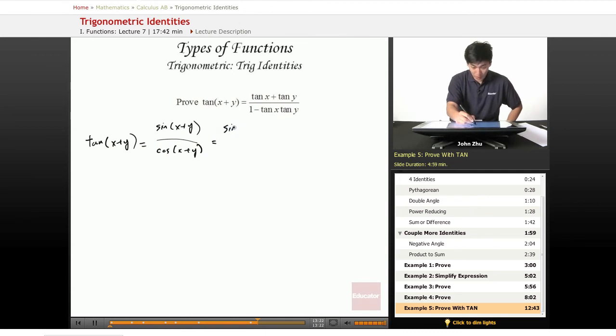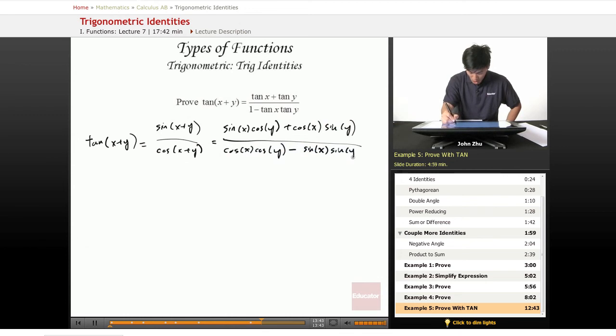By identity we get sine of x cosine of y plus cosine of x times sine of y all over cosine of x cosine of y minus sine of x times sine of y.